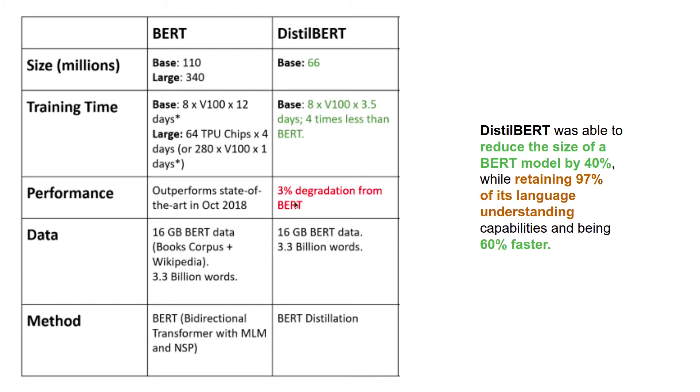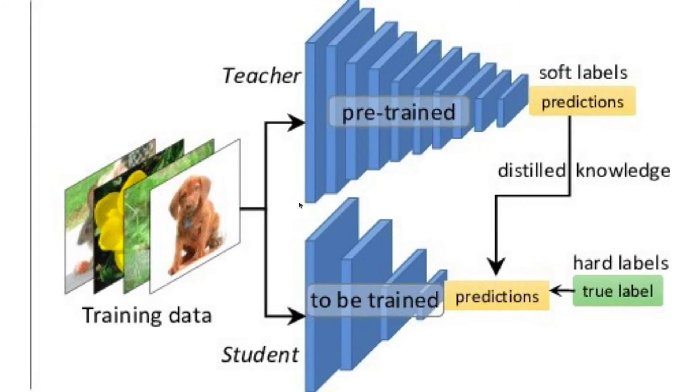This proves that decent language models in production need not be in gigabytes and inference can still be done in milliseconds even with a CPU. Okay, so let's see how DistilBERT was born.